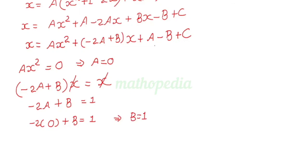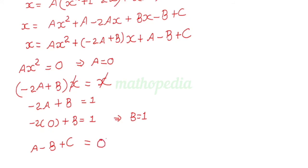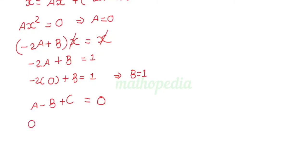Next, equating the constants on both sides. The constant on the right is A minus B plus C. On the left side we do not have any constants, so A minus B plus C equals 0. We already have A equals 0 and B equals 1, so 0 minus 1 plus C equals 0, giving C equals 1.